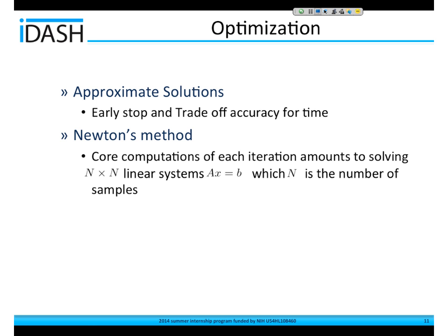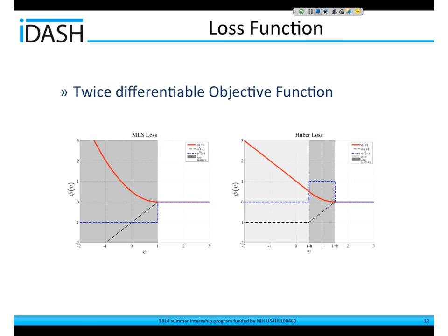As mentioned, we try to optimize approximately — we just run iterations to obtain a solution within a limited amount of time. Newton's method is an optimization algorithm that in each iteration solves a linear system. So if we have n samples, we would be solving an n-by-n linear system in each iteration. These are the loss functions: the left one is the modified least-squares loss function, where the shaded area determines the number of support vectors.